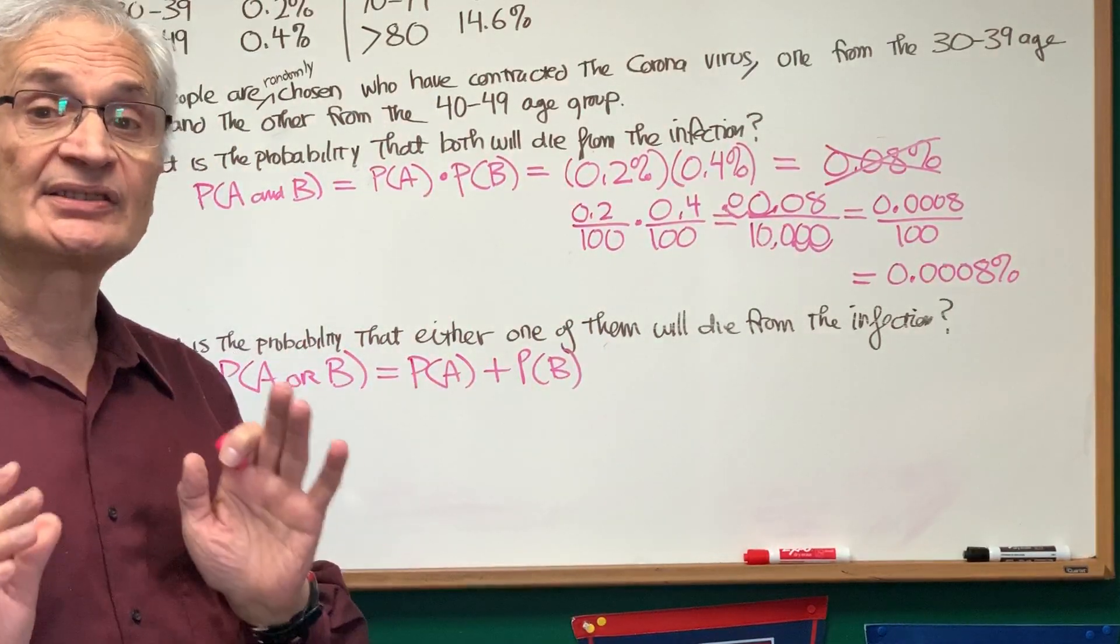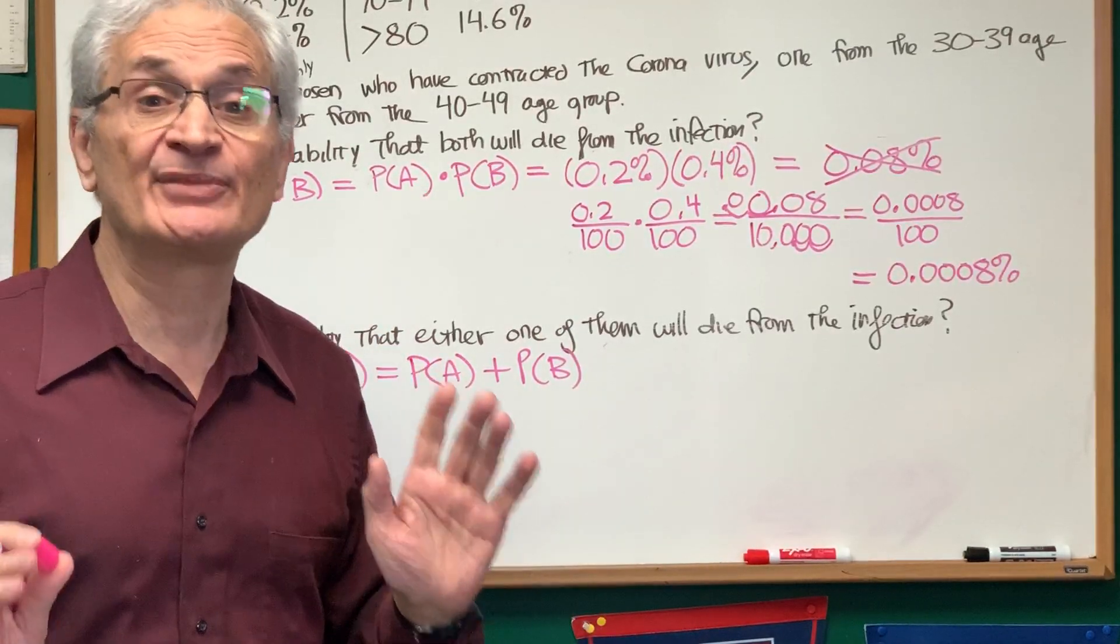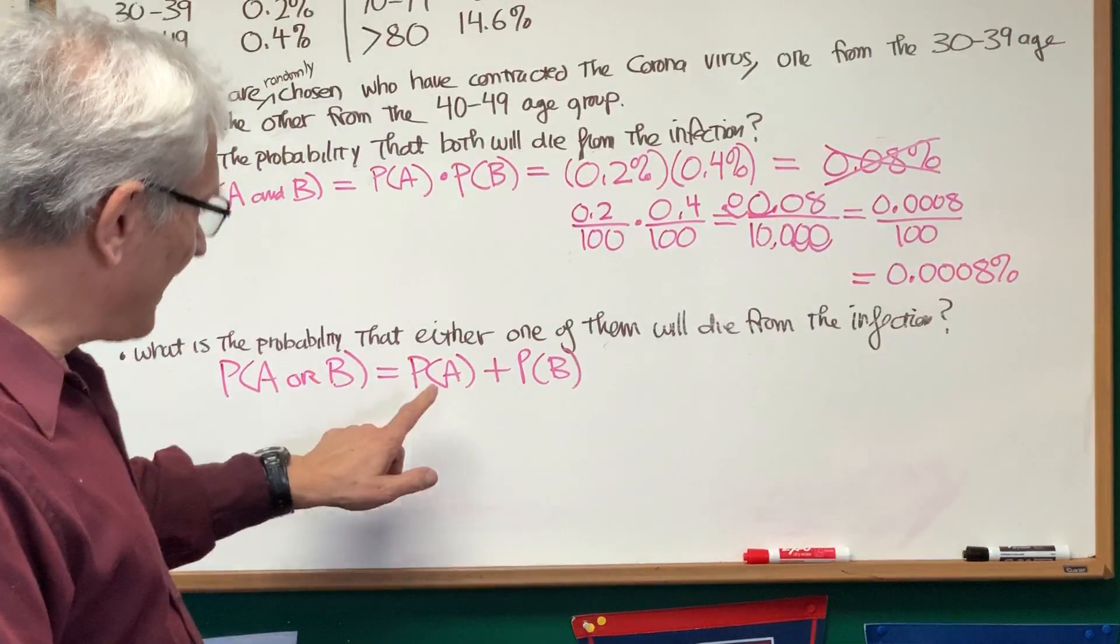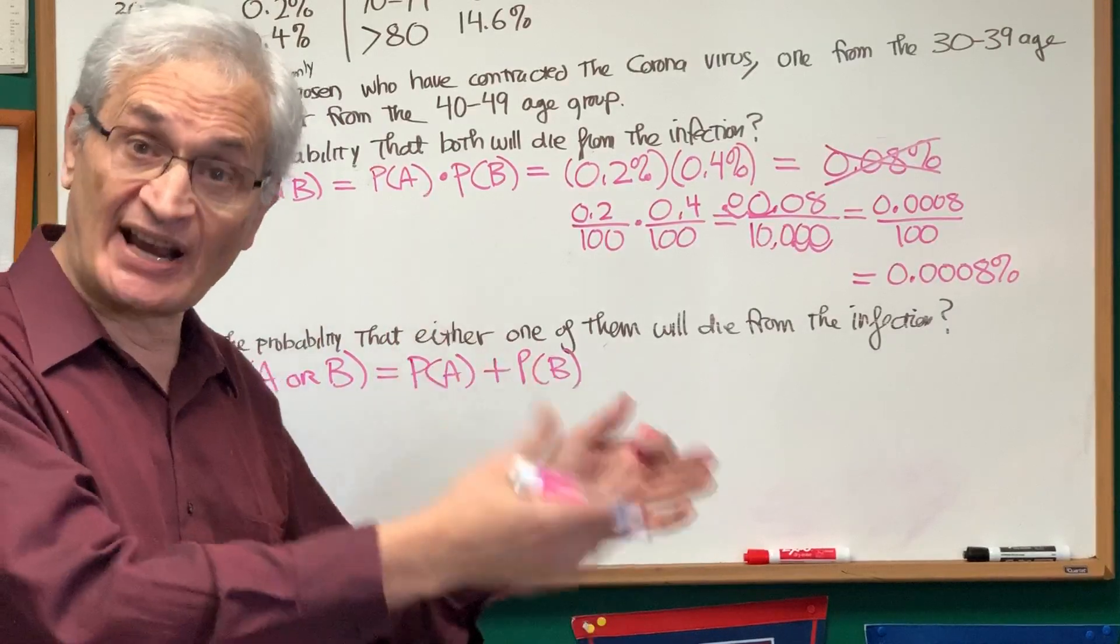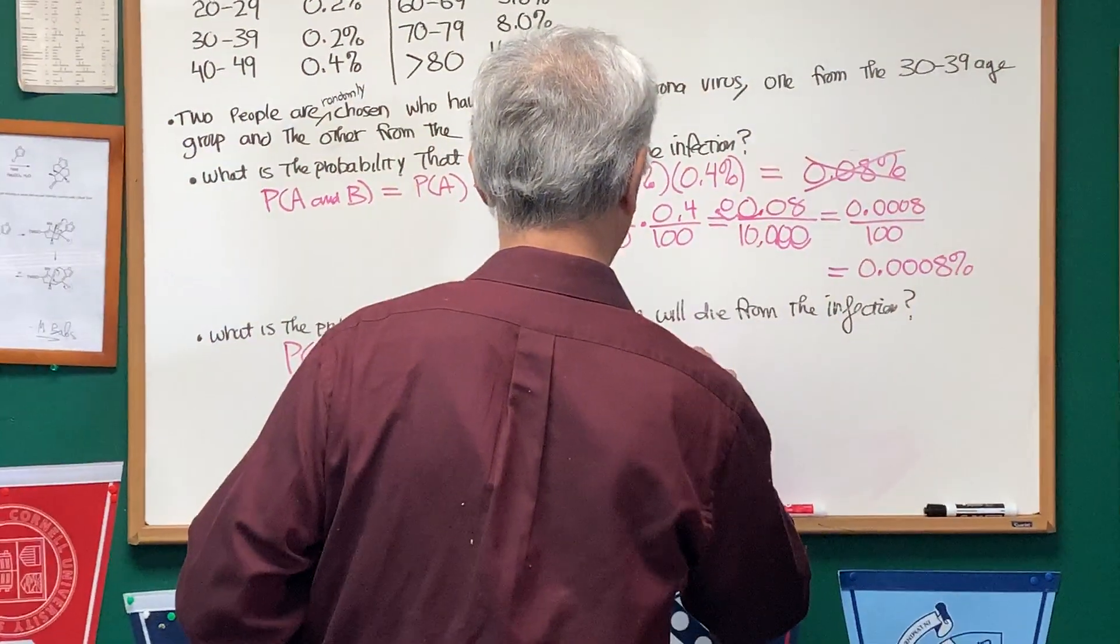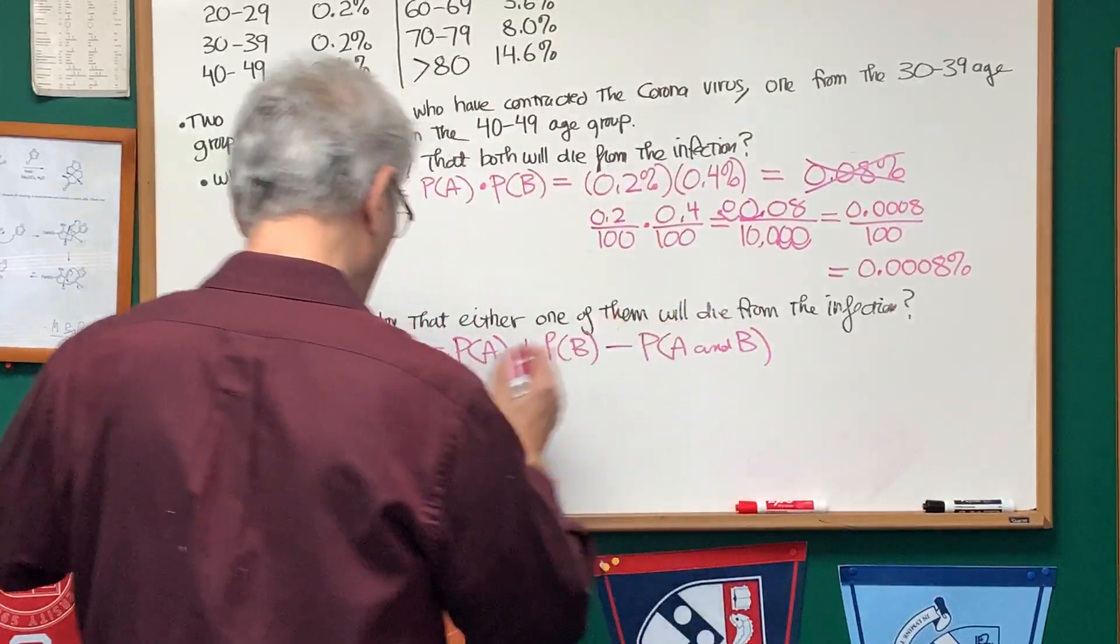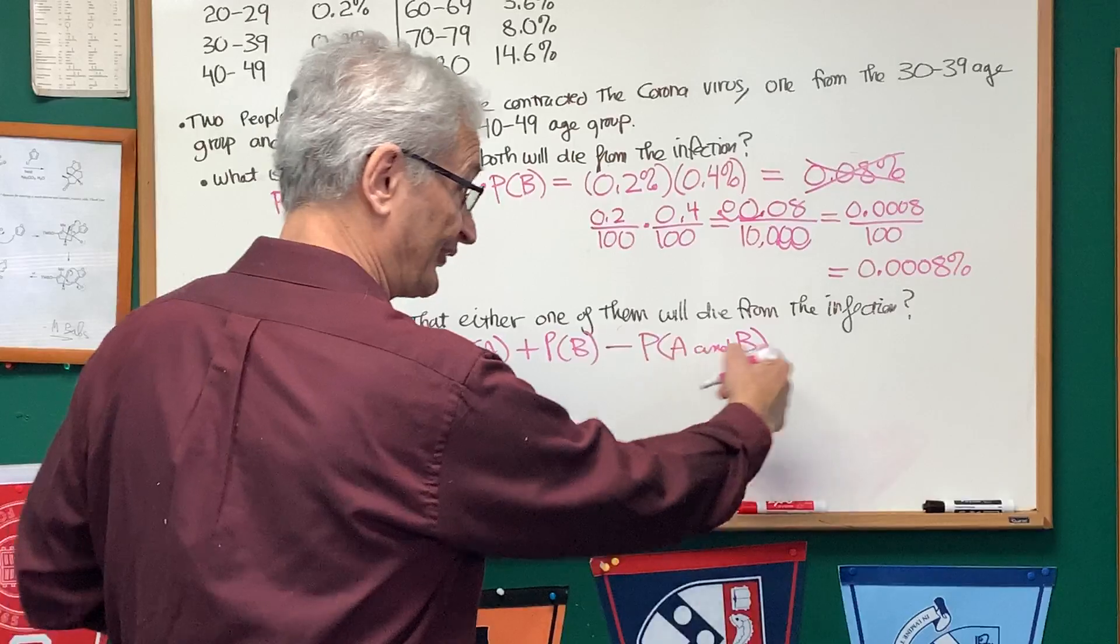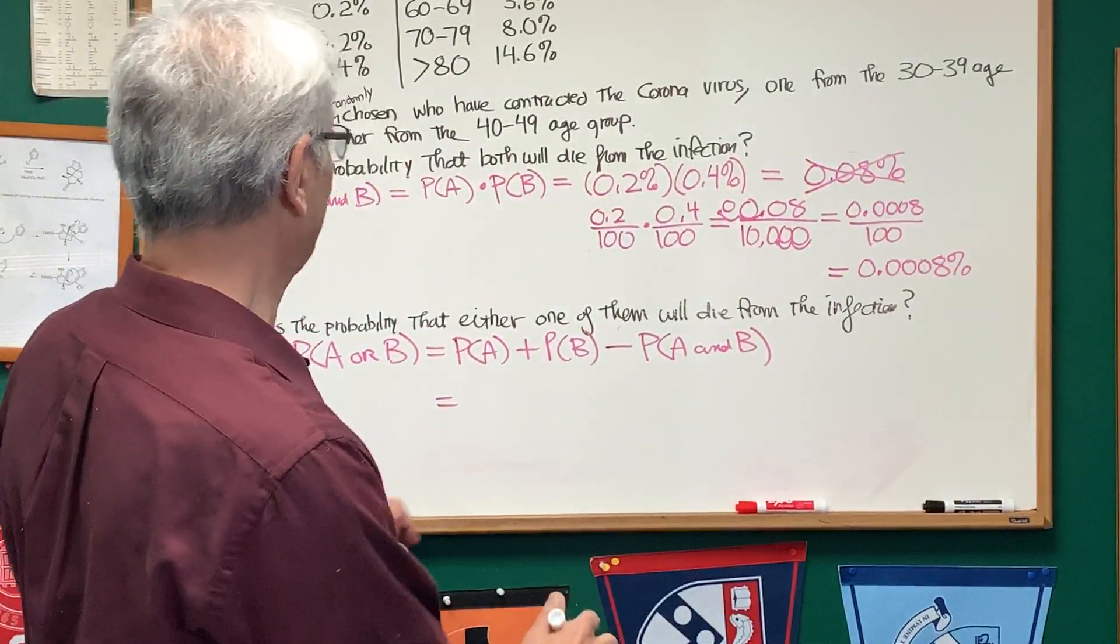Now, there's one little addition we have to make to this formula, because these events are not mutually exclusive. By adding these two probabilities up, we're adding the probability of the simultaneous contraction twice. We have to subtract the probability of A and B. And this is a standard formula for events that are not mutually exclusive.